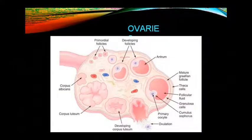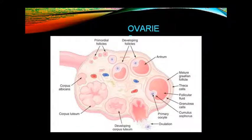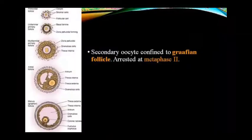Looking at the ovary diagram: corpus albicans and corpus luteum are shown, along with the developing corpus luteum. Primordial follicles develop into developing follicles, then into the mature Graafian follicle with theca cells, follicular fluid, and granulosa cells surrounding it. The cumulus oophorus is shown, from which the primary oocyte is released during ovulation. After ovulation, the remaining structure forms the developing corpus luteum, which matures into the corpus luteum and then into the corpus albicans. The secondary oocyte remains confined in the Graafian follicle and is arrested in metaphase II.